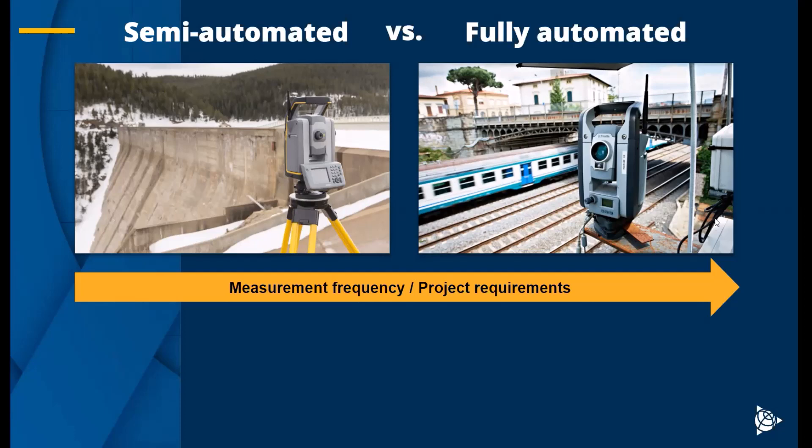With the fully automated project, it's a really similar workflow. We're just setting up the total station in the field to run 24-7, so it's just collecting data at a higher frequency for a longer duration, and nobody needs to be there with the equipment. Regardless of if you do the semi-automated or the manual workflow or the fully automated workflow, it's all going to be the same principles. It doesn't matter the method. It's all the same when it comes to total stations and monitoring and surveying.